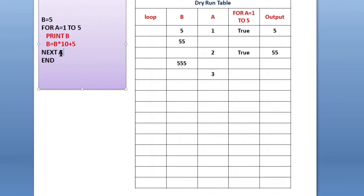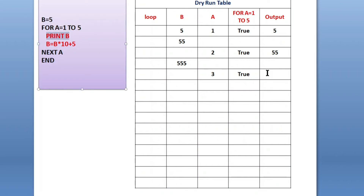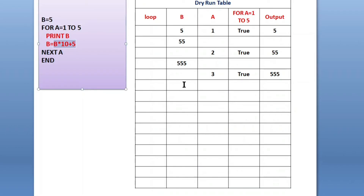After incrementing, it gets back to the loop. Now a value is 3 — is this true? Yes, it is true because 3 is in range 1 to 5. Condition is true, so it goes inside the loop again. Print b: the latest value of b is 555, so 555 is printed. Then b equals to b into 10 plus 5 — 555 into 10 plus 5 gives 5555.